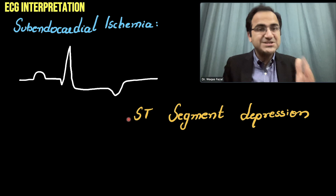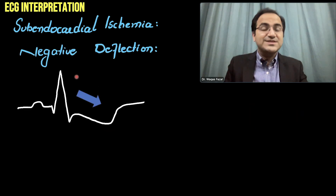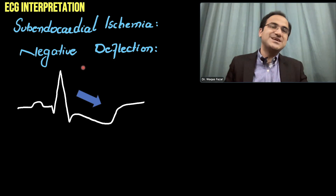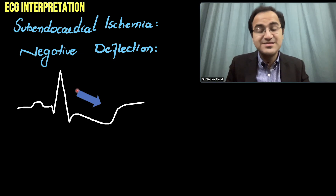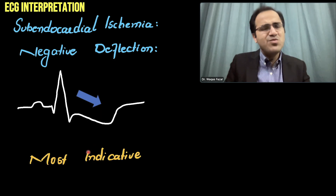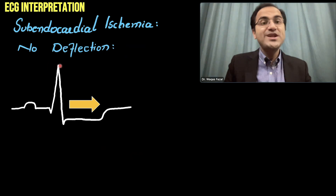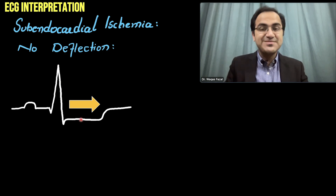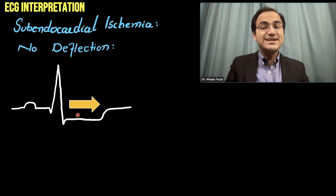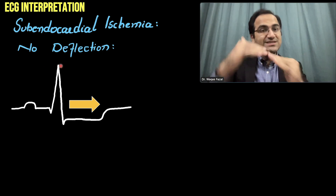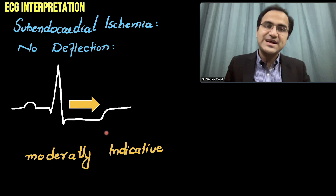Not all ST segment depressions indicate subendocardial ischemia. There are three different types. The first is negative deflection ST segment depression, where you see down-sloping of the ST segment — this pattern is most indicative of subendocardial ischemia. The second is no deflection, or squaring off, where the whole ST segment is depressed equally and the line comes down horizontally. This is moderately indicative of subendocardial ischemia.